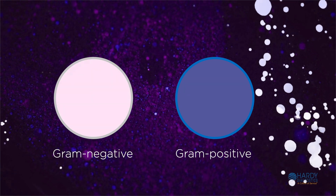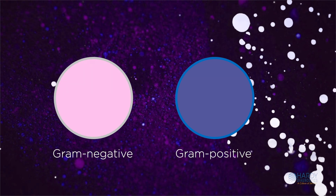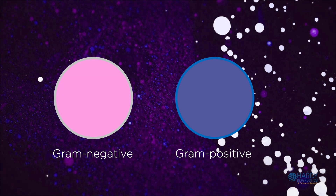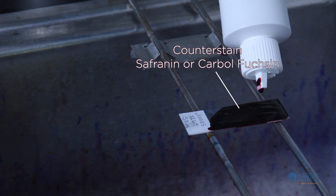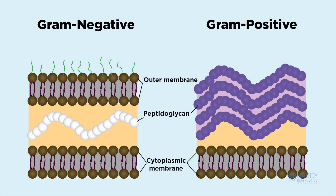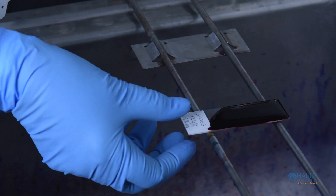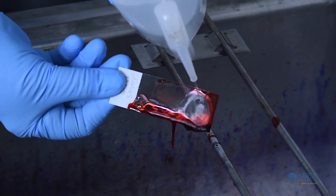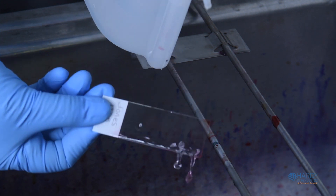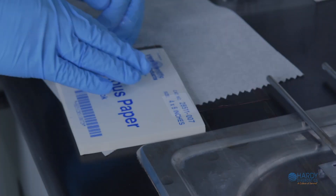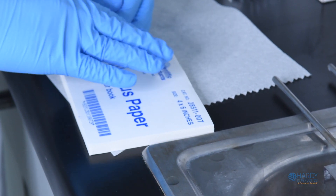The final step utilizes a counterstain of a different color to differentiate gram-negative from gram-positive cells. Cover the slide with safranin or carbolfuchsin for one minute. The gram-negative bacteria will absorb this dye, causing them to stain pink to red. There will be no effect on gram-positive cells since they retain the initial crystal violet stain. Rinse the slide with deionized or tap water. Do not wash the slide excessively. Allow the slide to air dry by tilting it onto a paper towel or over a sink.